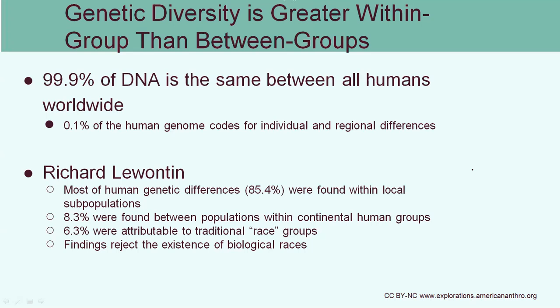A study by Richard Lewontin showed that most of human genetic differences were found within local subpopulations, further disproving the traditional definition of race as a biological phenomenon.